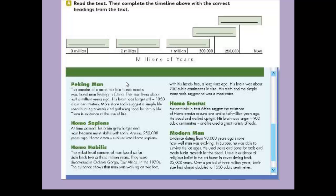Homo Sapiens: As time passed his brain grew larger and man became more skillful with tools. Around 250,000 years ago, Homo erectus evolved into Homo sapiens.